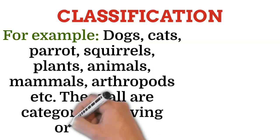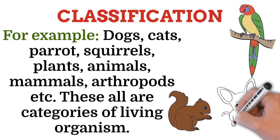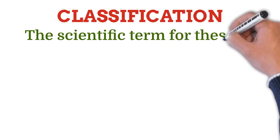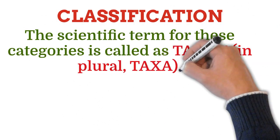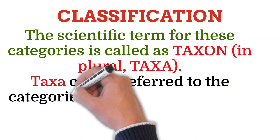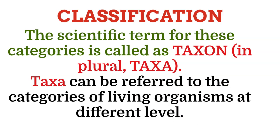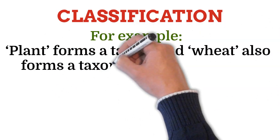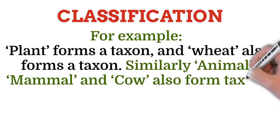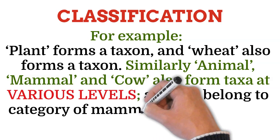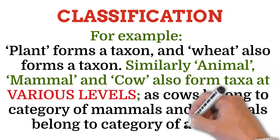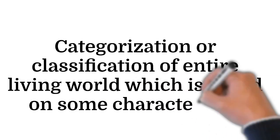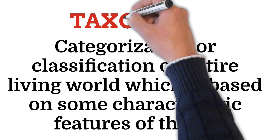These are all categories of living organisms. The scientific term for these categories is called a taxon, and in plural, taxa. Taxa can be referred to the categories of living organisms at different levels. For example, 'plant' forms a taxon and 'wheat' also forms a taxon. Similarly, animal, mammal and cow also form taxa at various levels — cows belong to the category of mammals, and mammals belong to the category of animals. This categorization or classification of the entire living world based on characteristic features is called taxonomy.